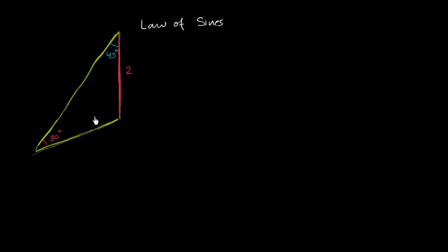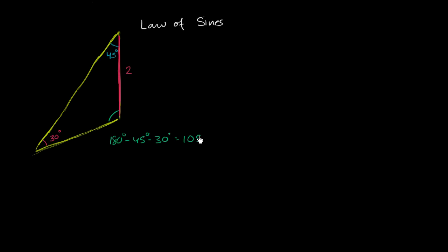For this triangle right over here, this is a 30 degree angle and this is a 45 degree angle. They have to add up to 180. So it's going to be 180 minus 45 minus 30, that's 180 minus 75, so this is going to equal a 105 degree angle right over here.